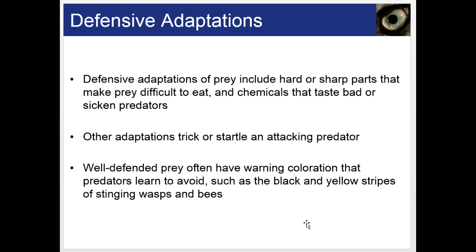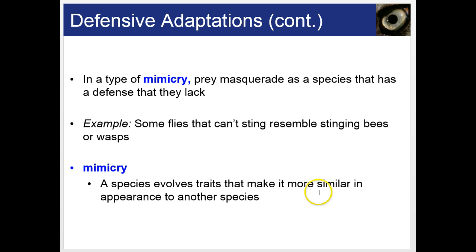In a type of mimicry, prey masquerade as a species that has a defense that they lack. For example, some flies that can't sting actually resemble stinging bees or wasps, making others avoid them. Mimicry is when a species evolves traits that make it more similar in appearance to another species, and it becomes a beneficial trait because others avoid them.